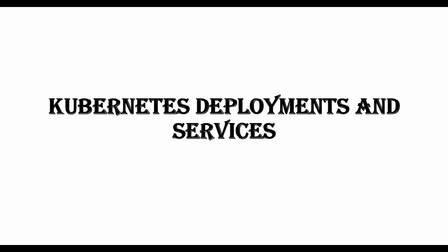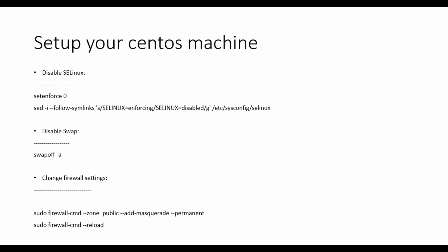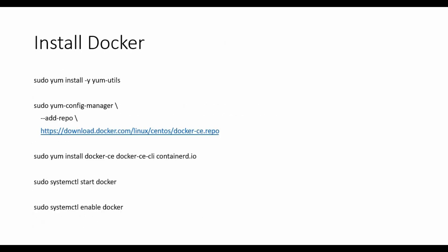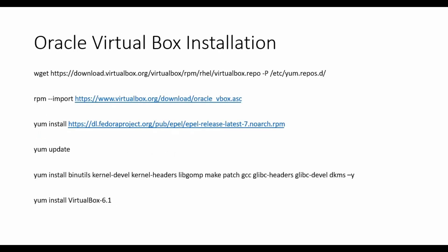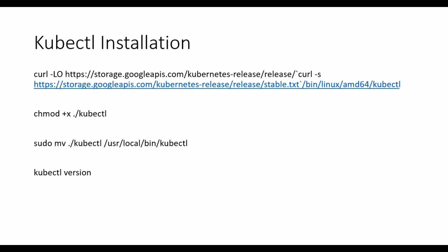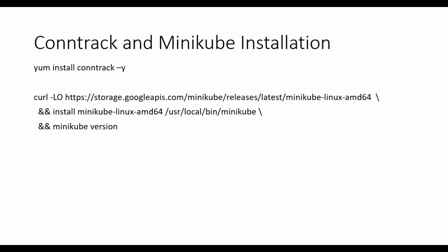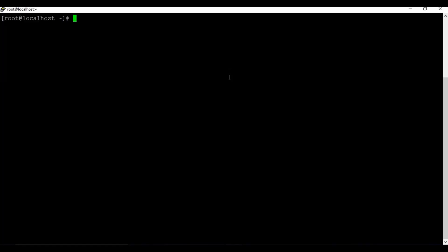Let me recap how we did it. First, we set up our CentOS machine - we disabled SELinux, disabled swap, made some changes in the firewall, then set up Docker. The next step was to install VirtualBox because we need a virtual client for Minikube. After that we configured kubectl, and the final step was the kubectl and Minikube installation. Once all these steps are done, we have a Minikube setup in our CentOS machine.